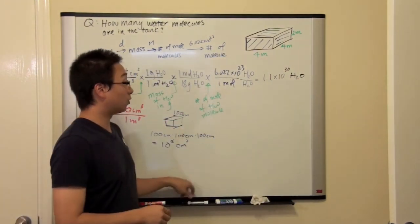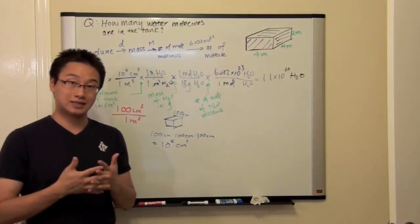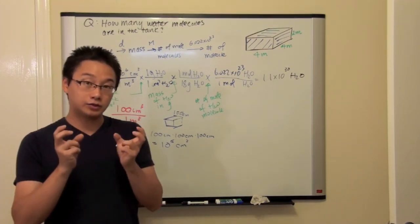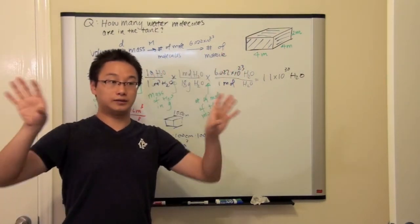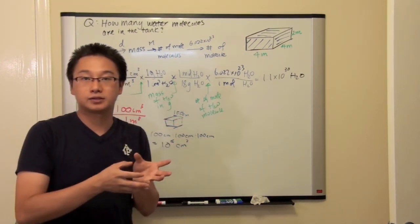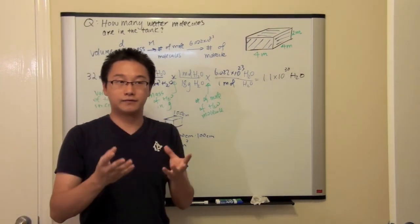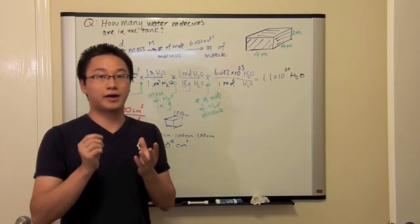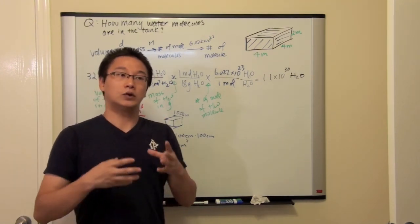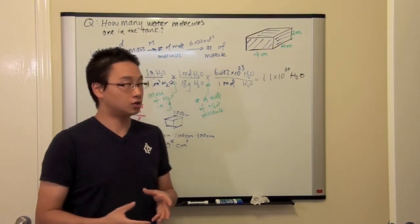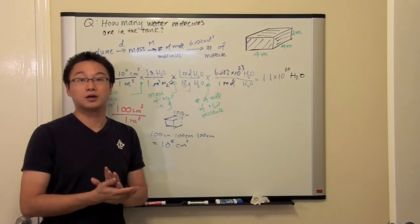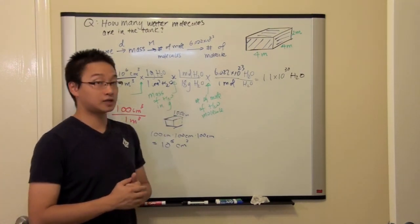The answer for this question is going to be 1.1 times 10 to the 30th water molecules. So in the tank, there is a total of this amount of water molecules. What I would like you to understand from this tutorial is that when you have to connect two distant dimensions, think of quantities that can help you relate them. It takes practice to develop those connections, but you have to be creative and think it through. I would suggest that you think before you actually pick up a pencil and do the math — because once you pick up a pencil, you try to force yourself to write something down, and you don't want to write nonsense. You want to write something correct that will lead you to the correct answer. I hope this tutorial helps you go through this type of difficult problem.